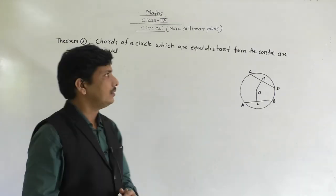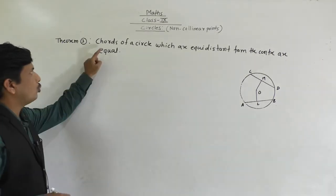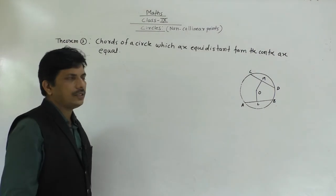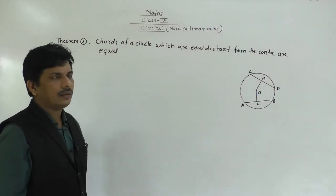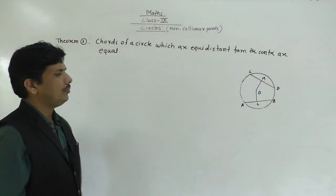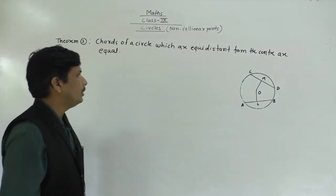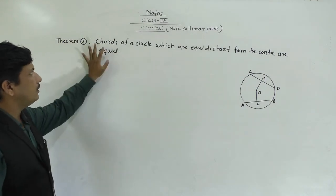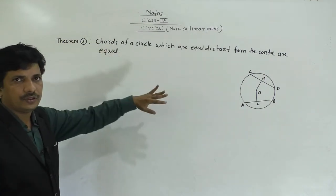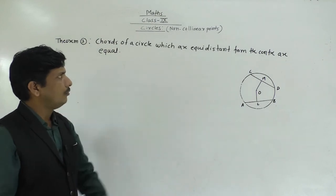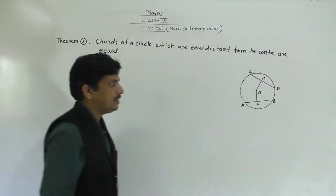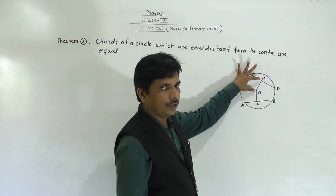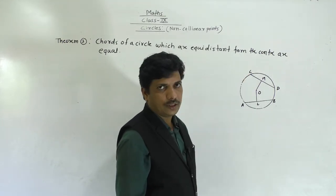Our next theorem is: chords of a circle which are equidistant from the center are equal. Here the figure shows OM equals OL — that is given. What we have to prove is that AB and CD are equal.